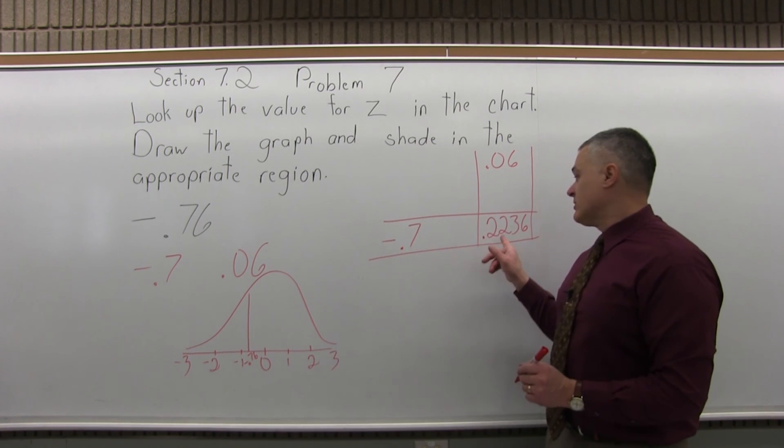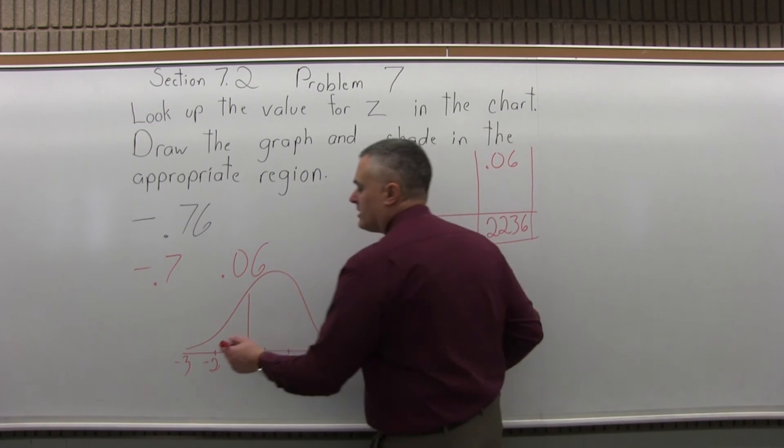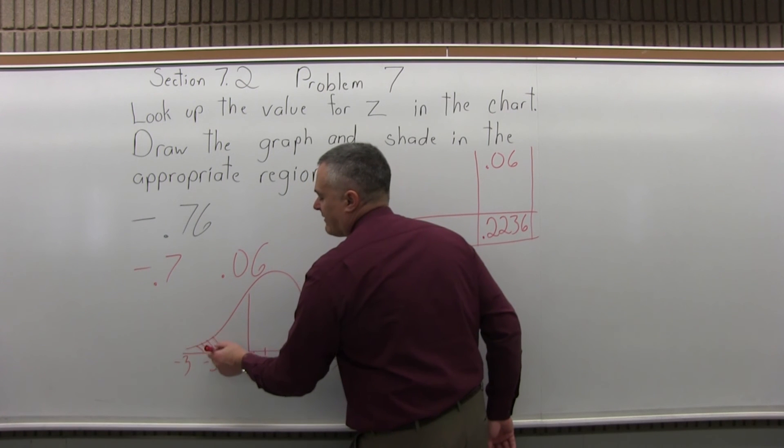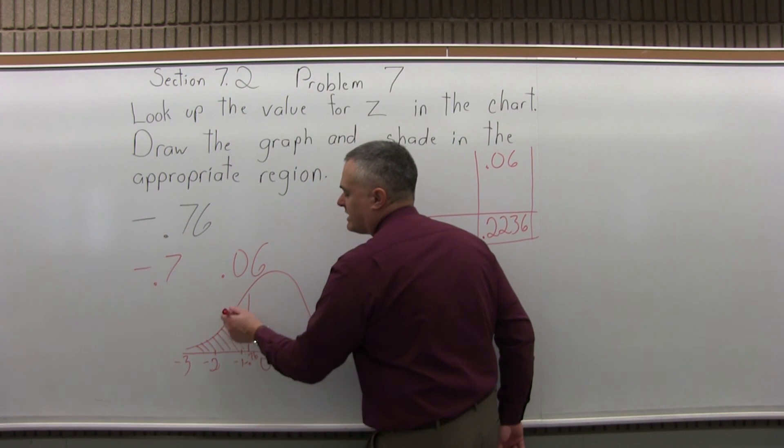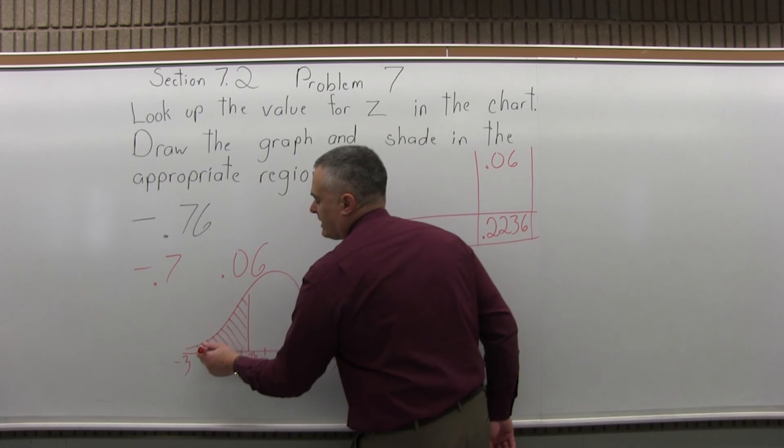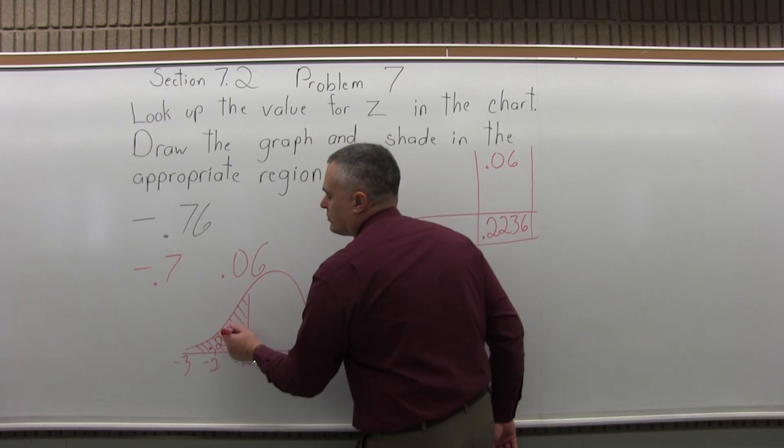And now the number from the chart, 2236, is the probability of being to the left of that value that we looked up. So I'll shade that in to the left, and I'll fill in .2236.